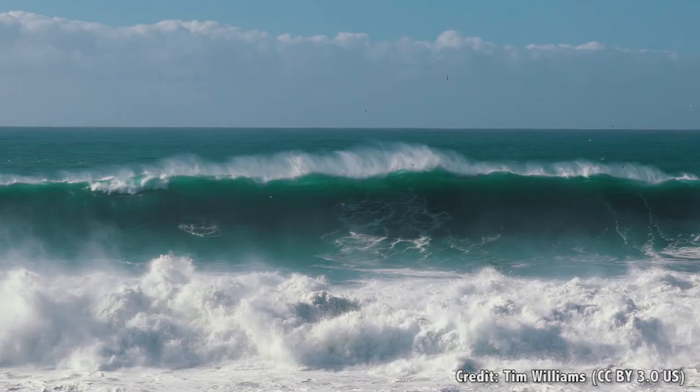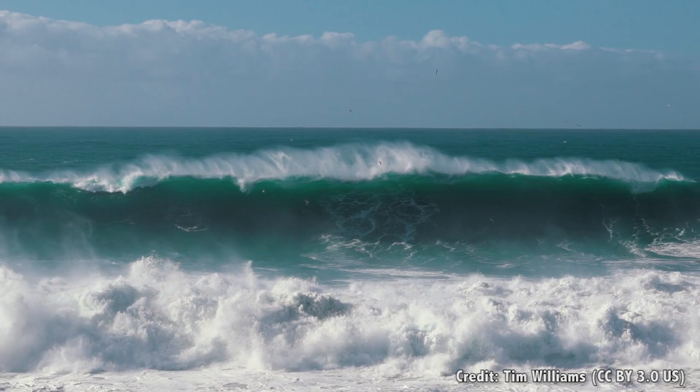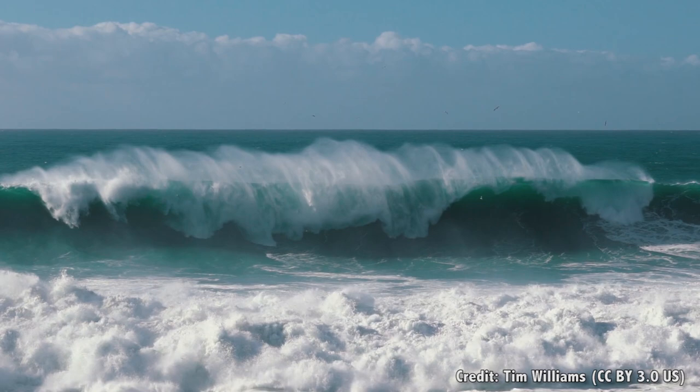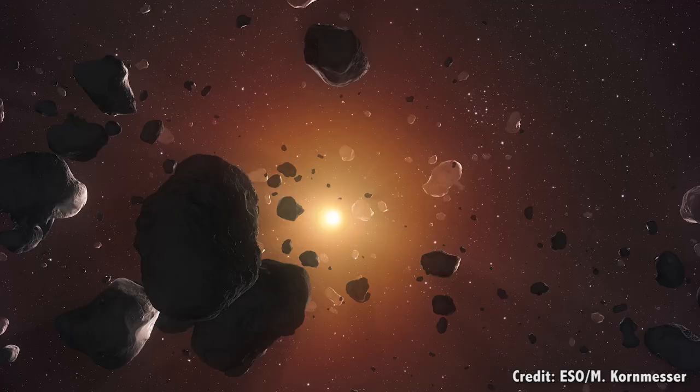However, even if the entire asteroid belt was ice, instead of it being a fairly small percent of the mass, that would still only be the approximate mass of Earth's oceans. There was a plentiful supply for early efforts but not enough for major terraforming efforts on places like Mars or creating many artificial habitats.